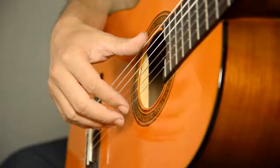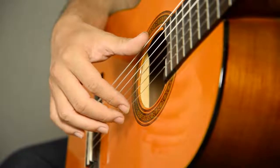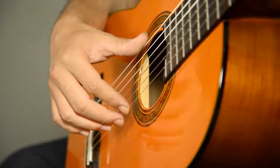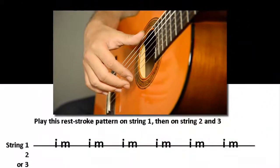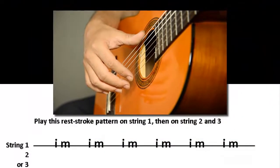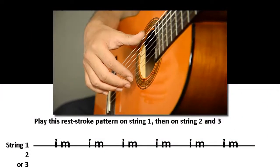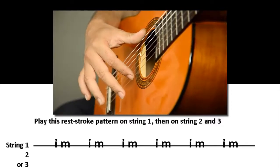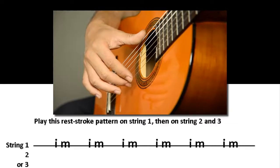In the last lesson, we learned about how to achieve the rest stroke. Now we're going to play some exercises. The first exercise, as you can see, is we're going to alternate on the same string, starting from string number one, and we're going to play I and M on the same string.